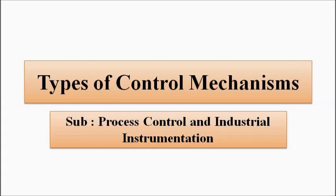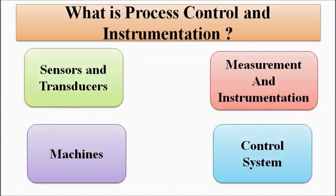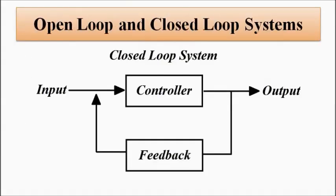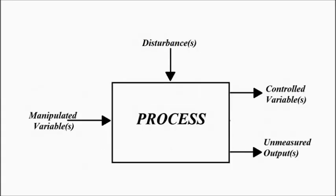Process control and instrumentation is a combination of four different fields: sensors and transducers, measurement and instrumentation, machines, and control systems. Grouping of these forms process control. A process is a continuous series of actions and operations which give us an end result — a number of operations happening either simultaneously or one after another which produce some end result that we want.